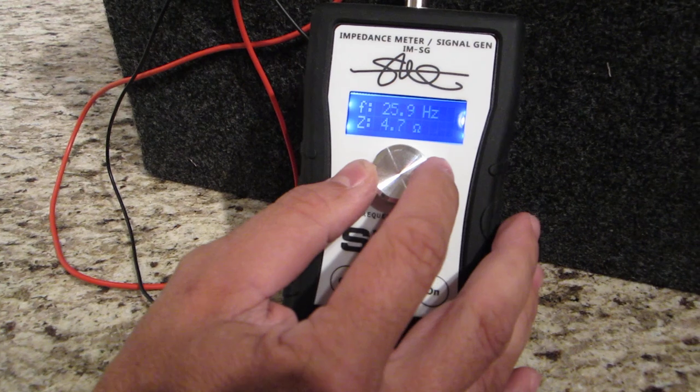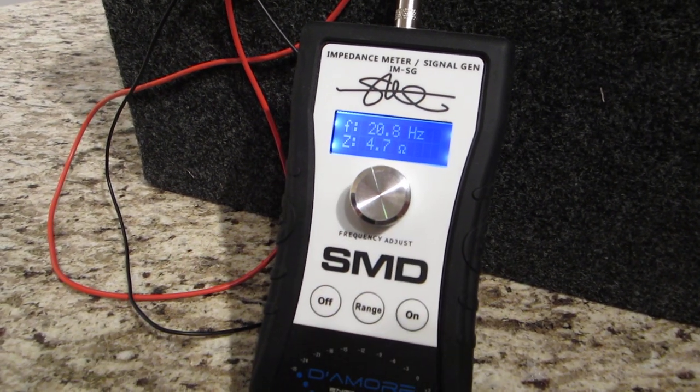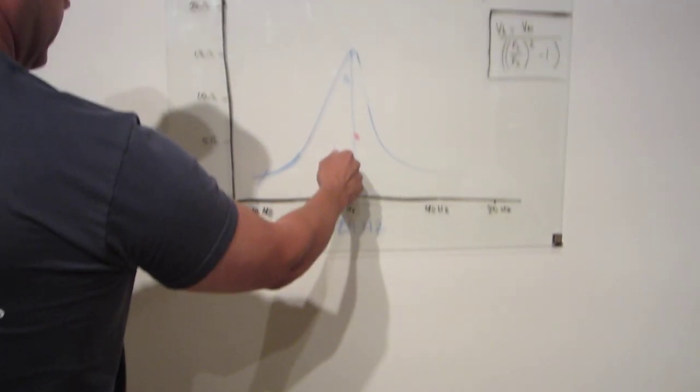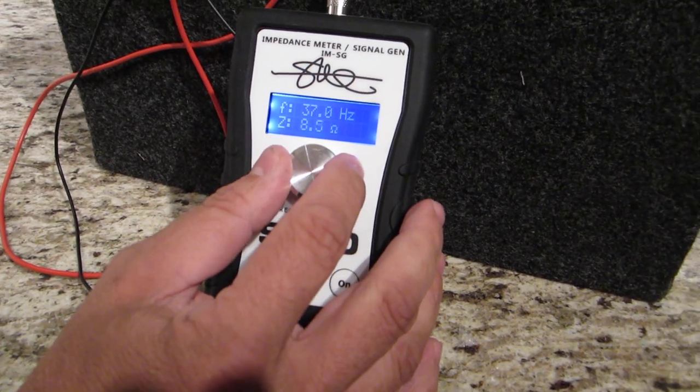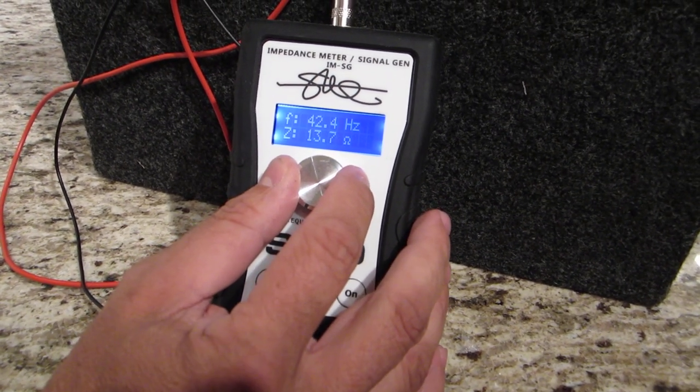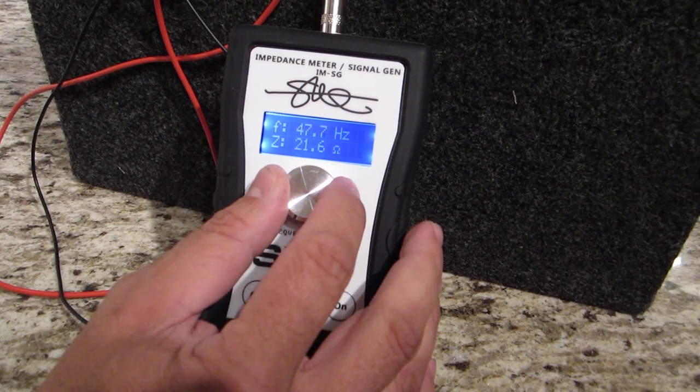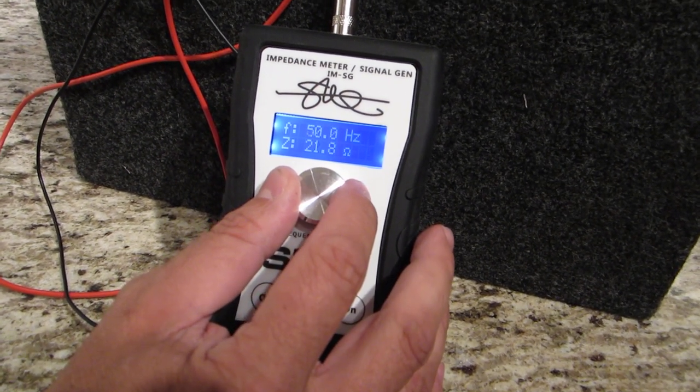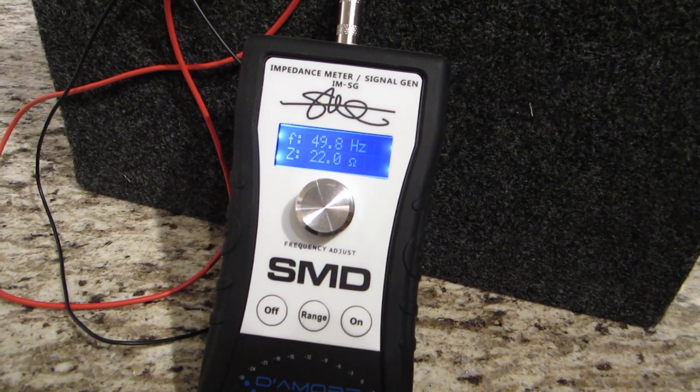Let's go down to 20 hertz real quick, see where we're at. About 4 something, so we're around here. Let's find our peak. Peak impedance. Oh, look at that. So, we just passed it right there. 49.8 hertz, 22 ohms.